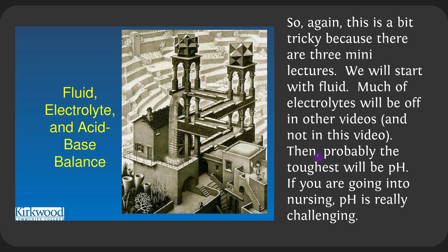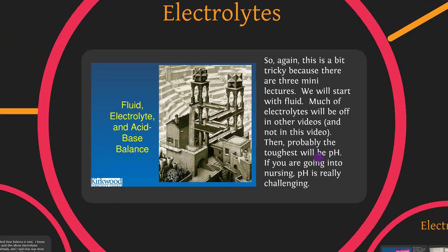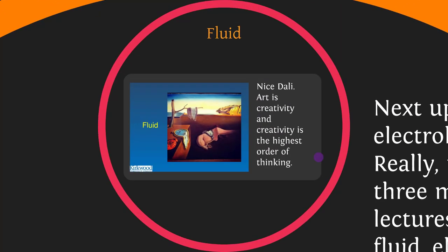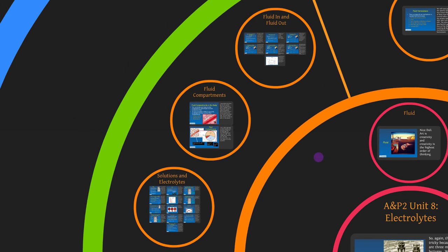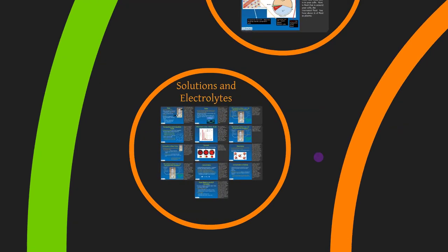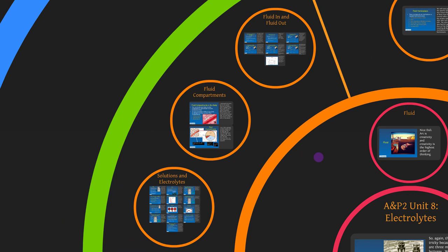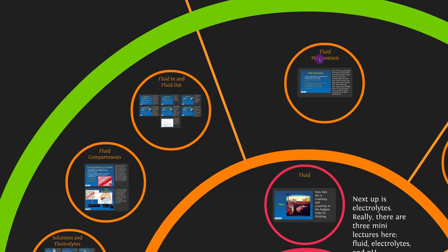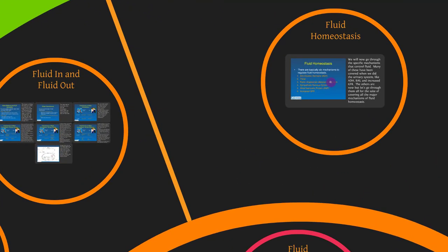This is a bit tricky because there are three mini-lectures. We'll start with fluid; much of electrolytes will be in other videos. The toughest topic is going to be pH. If you're going into nursing, pH is really challenging — they're called arterial blood gases. We're going to go into solutions and electrolytes, then fluid compartments, then fluid in and fluid out. Then we'll cover fluid homeostasis, some of which we've already talked about, like the renin-angiotensin-aldosterone system.